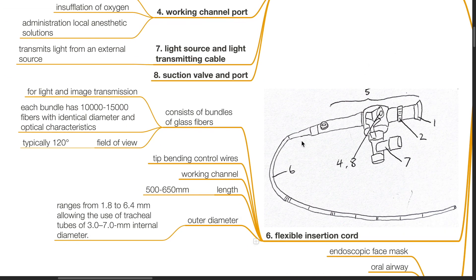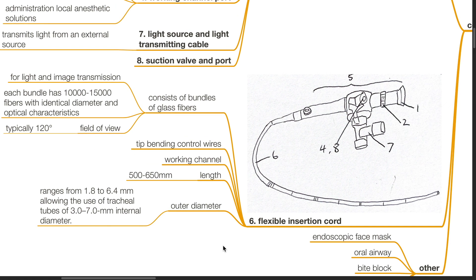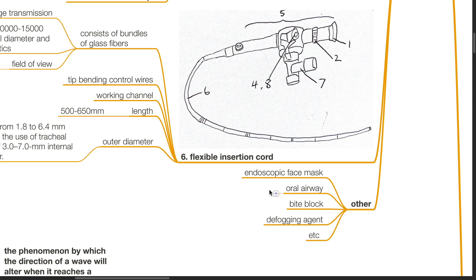Number 6 is the flexible insertion cord, which consists of bundles of glass fibers for light and image transmission. Each bundle has 10,000 to 15,000 fibers with identical diameter and optical characteristics. Field of view is typically 120 degrees. It also contains tip bending control wires and working channel. Its length is typically 500 to 650 millimeters. Outer diameter ranges from 1.8 to 6.4 millimeters, allowing use of tracheal tubes of 3 to 7 millimeters internal diameter. Other equipment necessary includes endoscopic face mask, oral airway, bite block, defogging agent, etc.